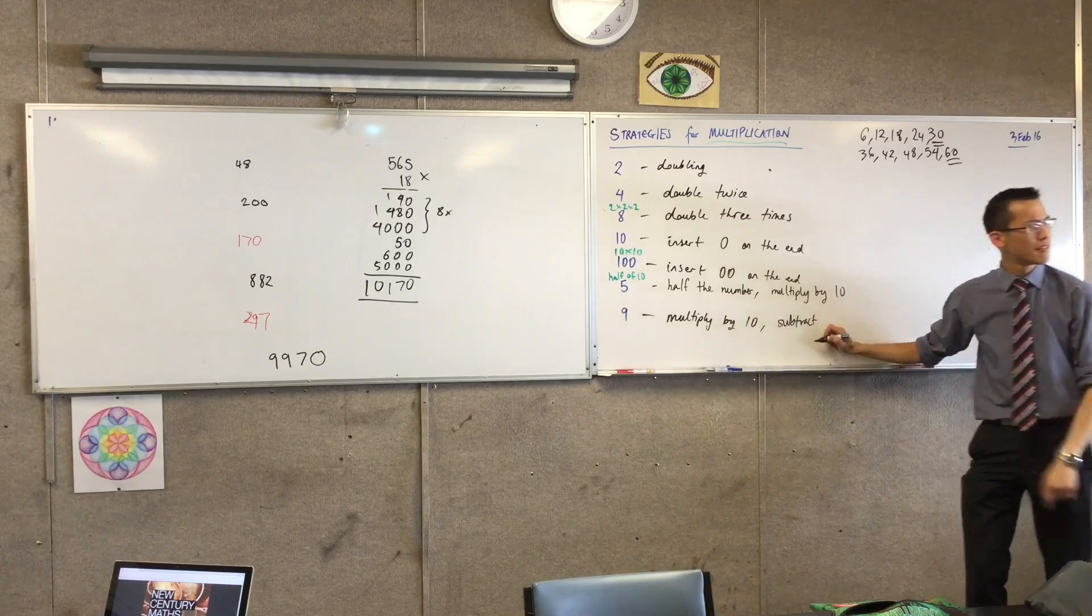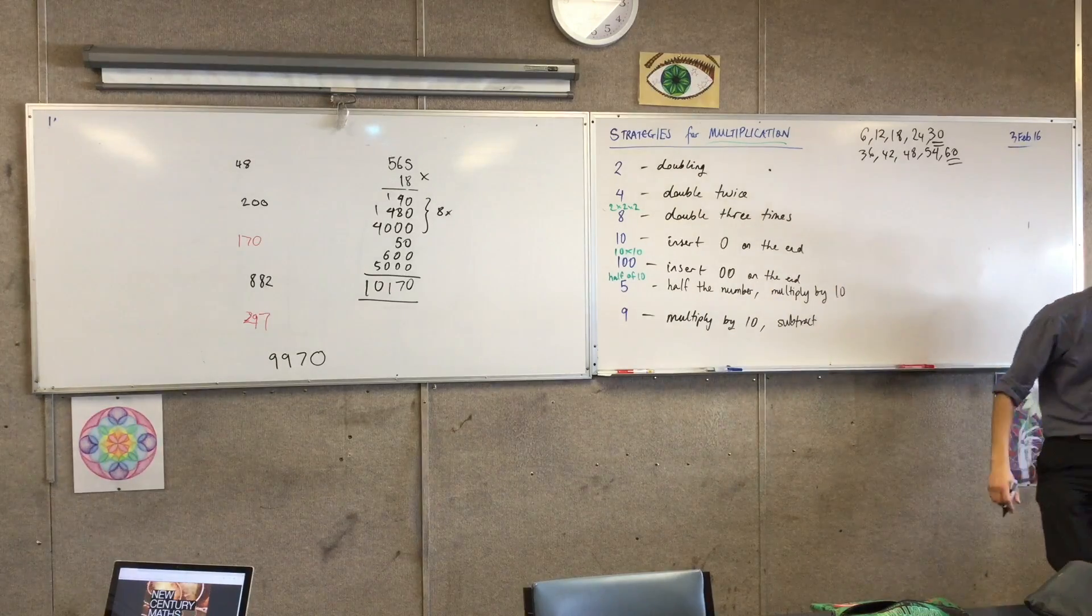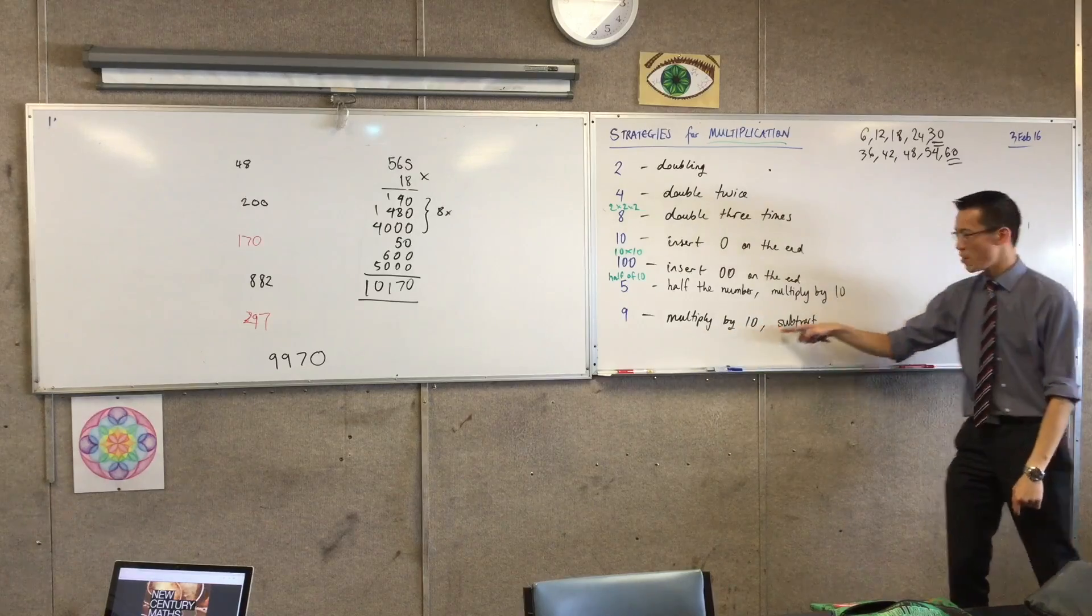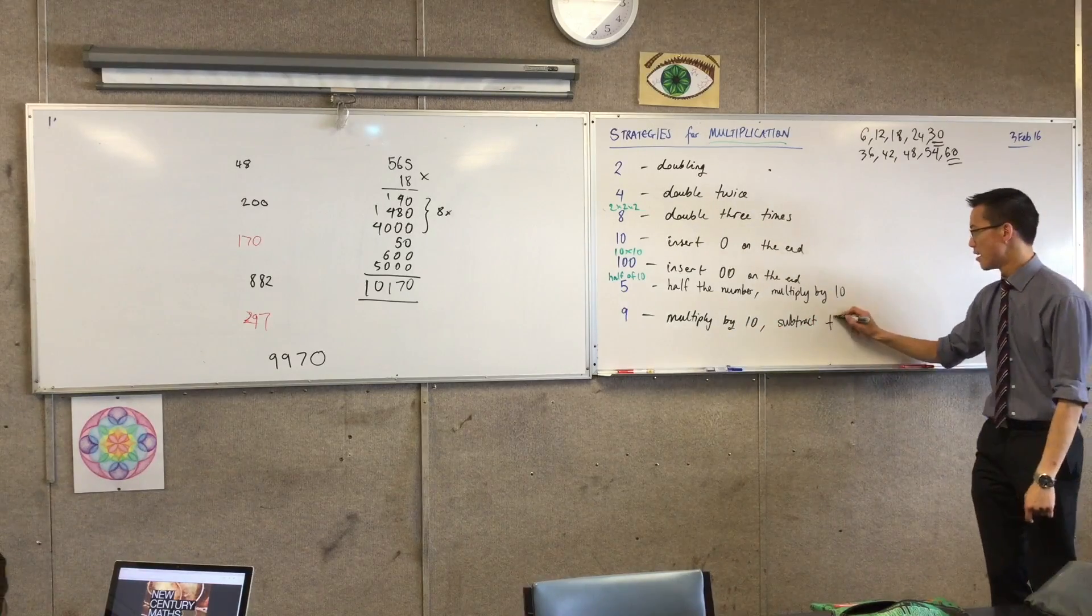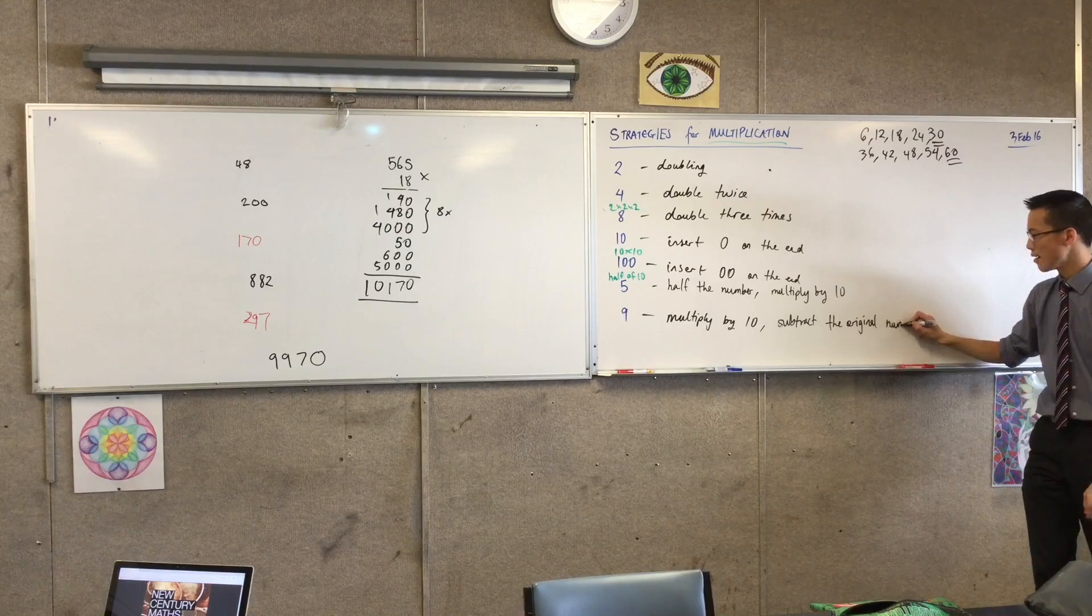Sorry, just to repeat. We're going to multiply by 10, and then we're going to subtract the original number.